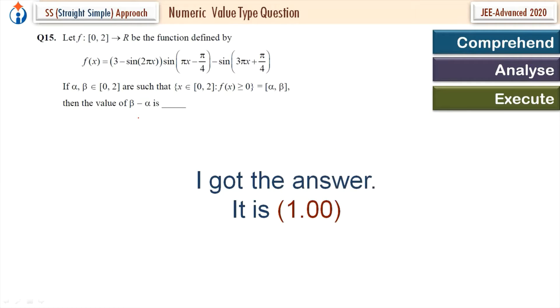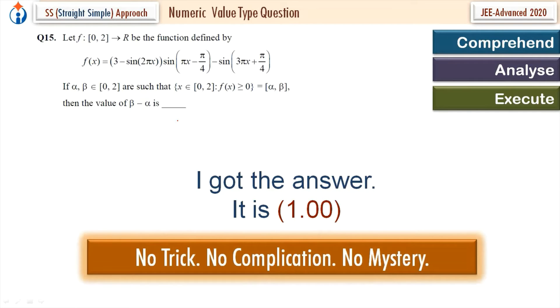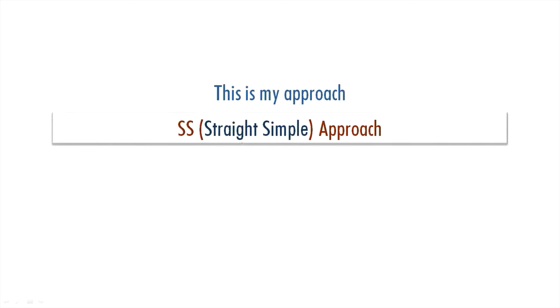And the value of beta minus alpha is 1. I got the answer — it is 1. No trick, no complication, no mystery. This is my approach: straight, simple approach — the SS approach. My name is Shashir Sani. I am a graduate of IIT Roorkee, class of 96, IIT JEE coach since 99. Thank you.